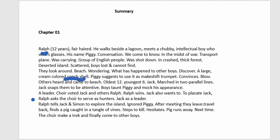They discover a conch shell and Piggy convinces Ralph to use it as a makeshift trumpet. Ralph blows it and other boys come to the beach. The oldest is 12 and the youngest is 6. Jack arrives marching with his choir group in two parallel lines and snaps at others. When they need a leader, the choir votes Jack while others vote Ralph — Ralph wins.